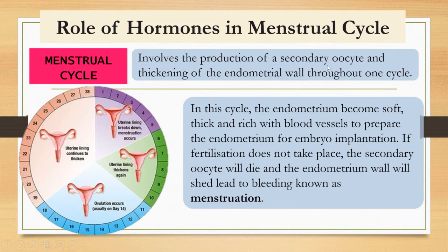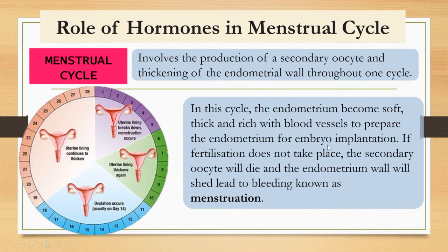The secondary oocyte refers to the female gamete — an immature female gamete that will develop into an ovum. The endometrium becomes soft, thick, and rich with blood vessels to prepare for embryo implantation. If fertilization does not take place, the secondary oocyte will die and the endometrium wall will shed, leading to bleeding known as menstruation.